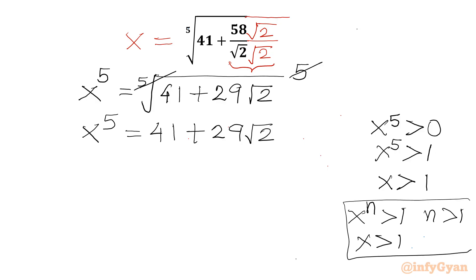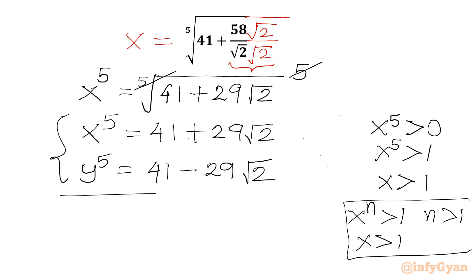Now I will consider y to the power 5, which will be equal to 41 minus 29 root 2. Taking these two equations and adding both: x to the power 5 plus y to the power 5 will be equal to 41 plus 41, which is 82.